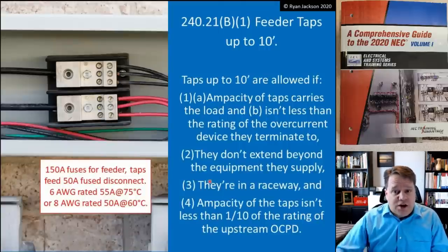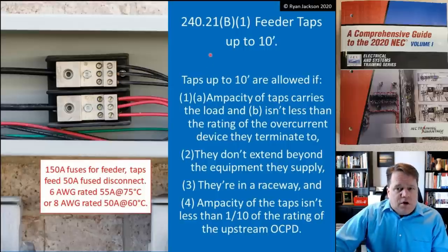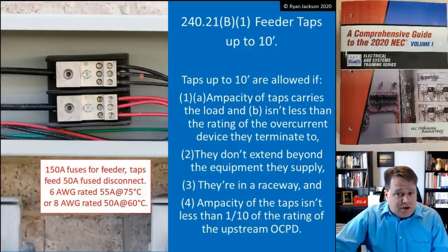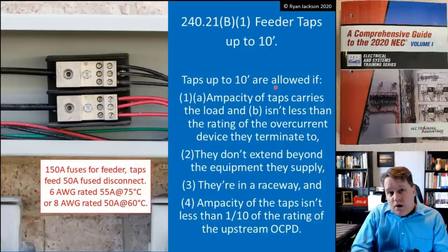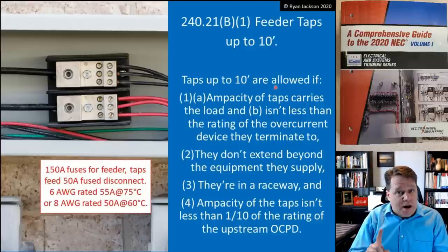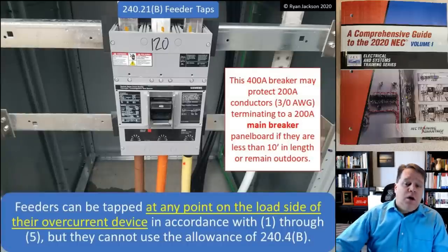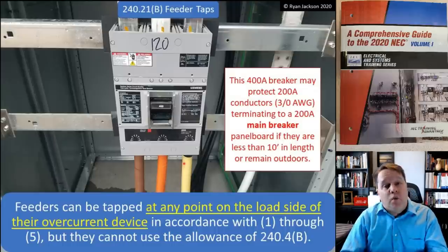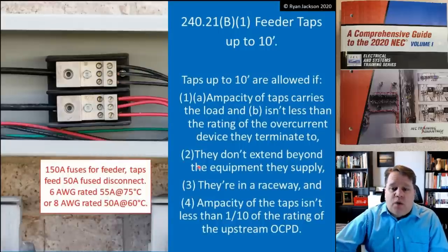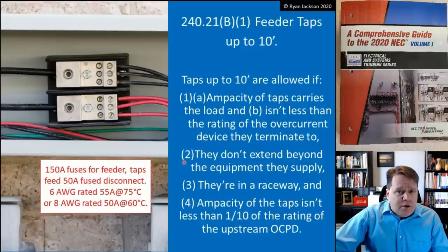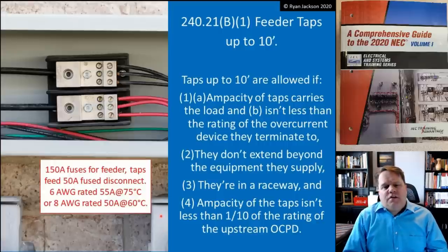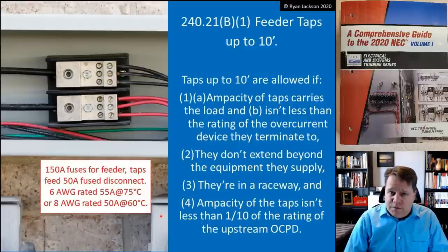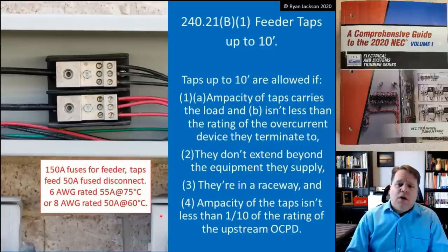A 10-foot feeder tap is allowed if the ampacity of the tap carries the load and is not less than the rating of the overcurrent device it terminates to on the load end. With a 400-amp breaker supplying 200-amp wire, if I keep the wires under 10 feet and they terminate to a 200-amp fuse or breaker, it may be acceptable. Additional criteria include not extending beyond the equipment they supply, keeping them in a raceway, and ensuring the tap conductor ampacity is not less than one-tenth of the upstream 400-amp device rating. This whole criterion goes away for outdoor feeder taps.